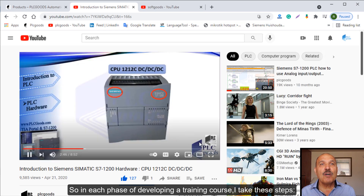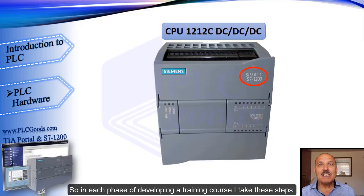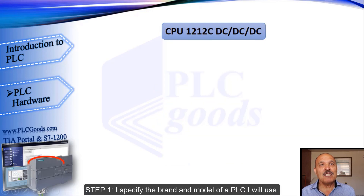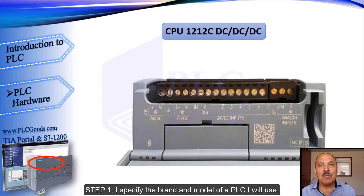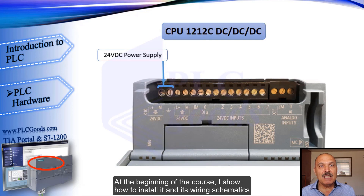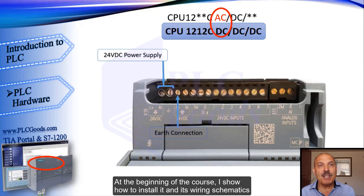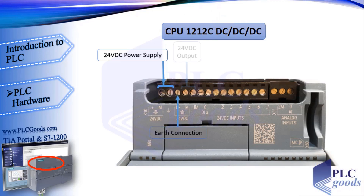So in each phase of developing a training course, I take these steps. Step 1: I specify the brand and model of a PLC I will use. At the beginning of the course, I show how to install it and its wiring schematics. This CPU has a 24-volt DC supply for sensors or other instruments which may be connected to it.